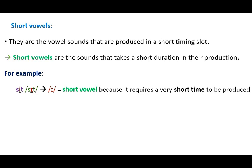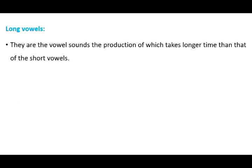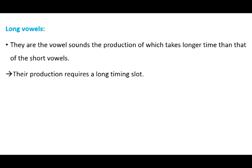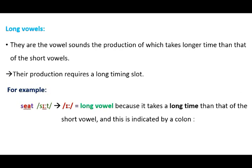By contrast, long vowels are the vowel sounds the production of which takes longer time than that of short vowels — their production requires a long time slot. For example, in the word 'seat,' the vowel 'ee' is a long vowel because its production takes a longer time than that of the short vowel, and this is indicated by a colon.